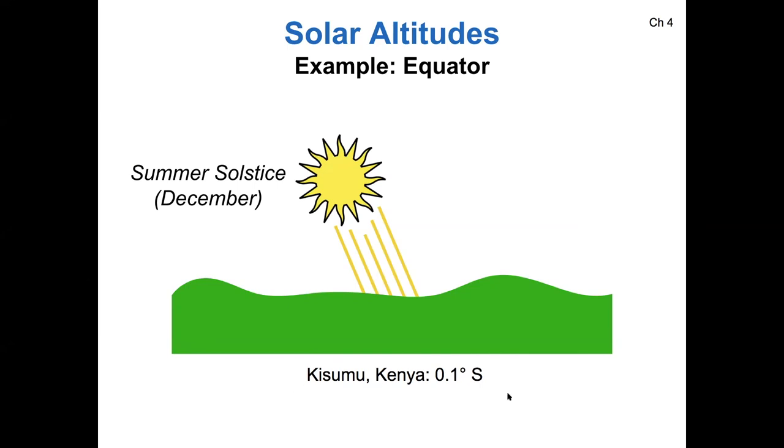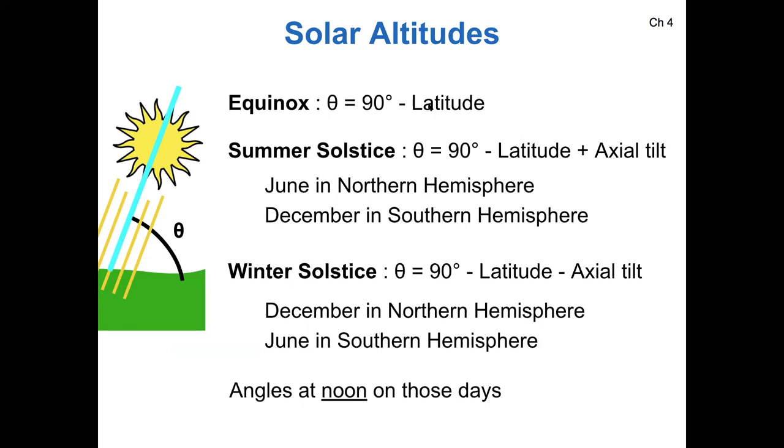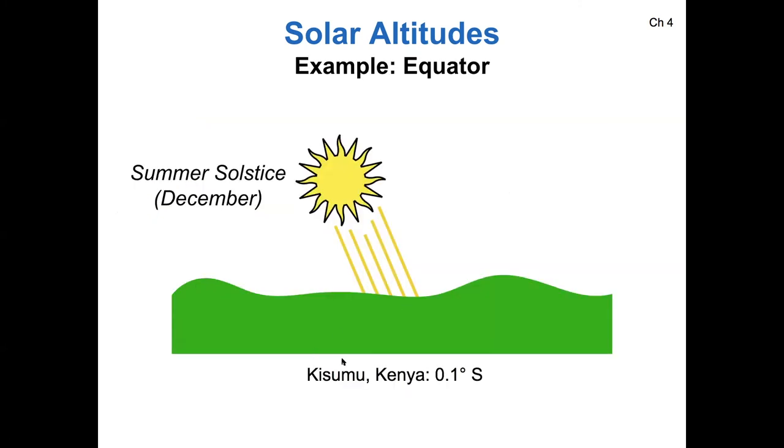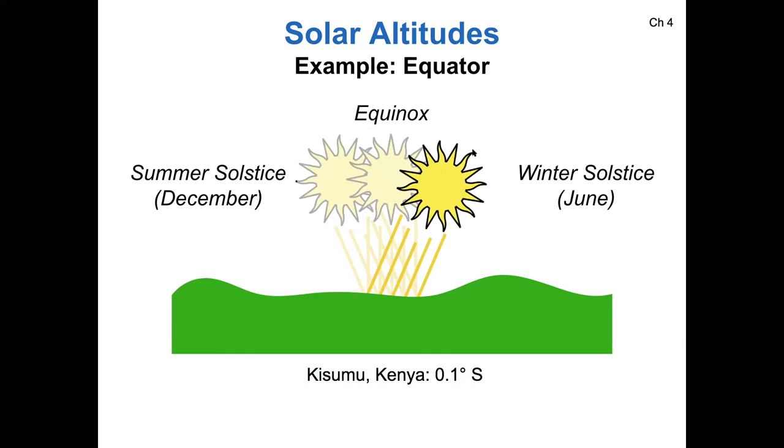Consider a latitude really close to the equator. If my latitude is zero degrees, then that means on equinox, the sun is at 90 degrees. On summer solstice, it should be 90 plus 23 and a half. On winter solstice, it should be 90 minus 23 and a half. In Kasumu, Kenya, which is really close to the equator, the equinox sun is directly overhead. And then for summer and winter solstices, the sun is 23 and a half, one axial tilt away from vertical.